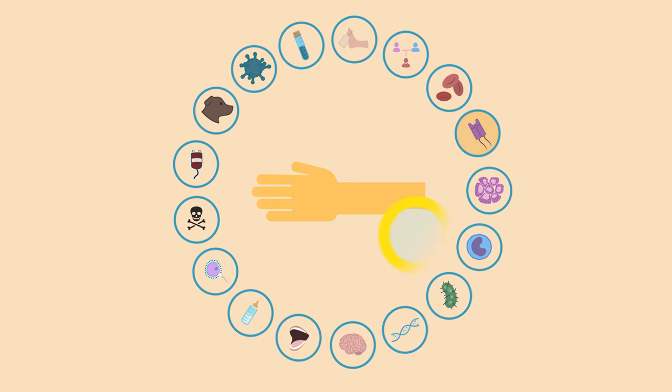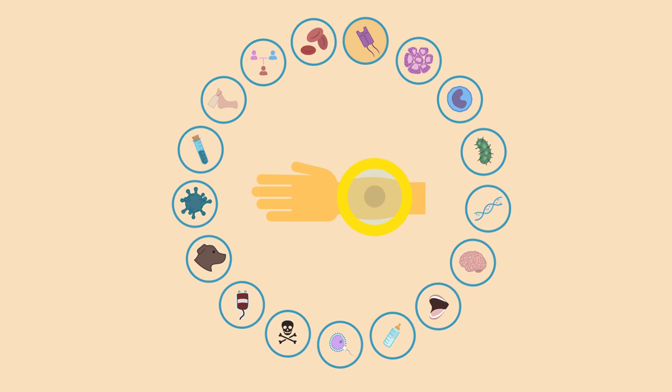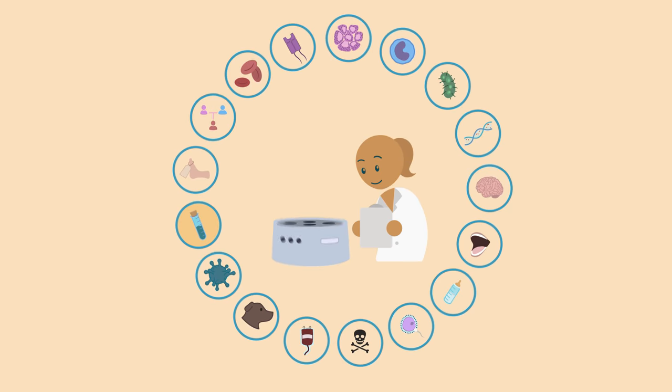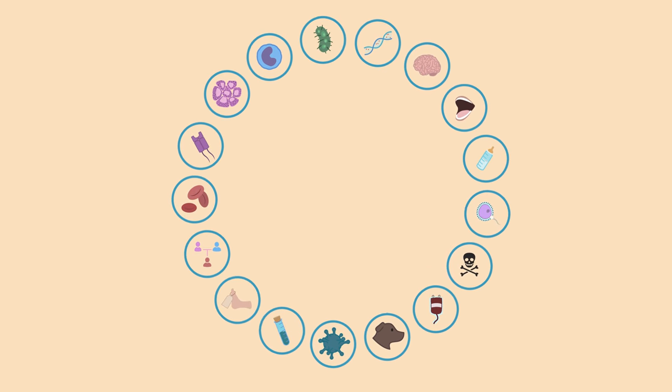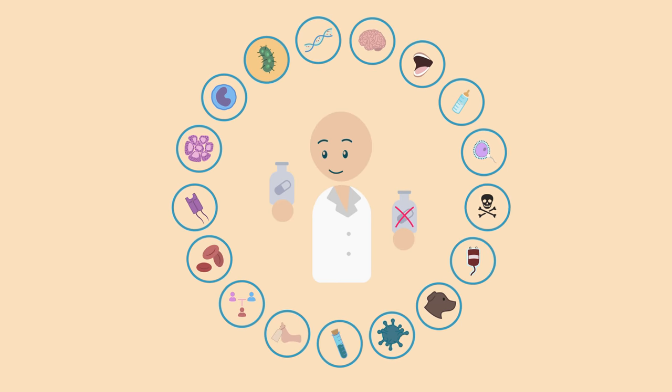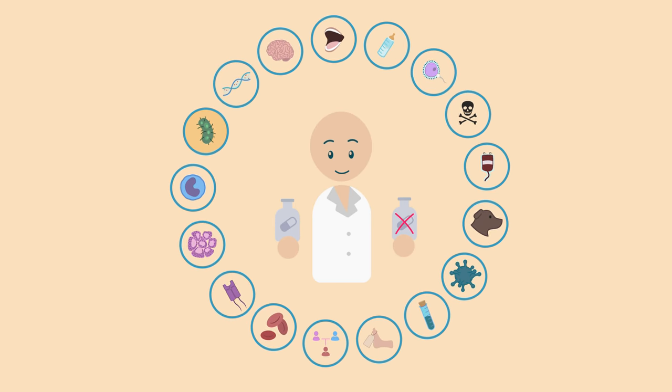When you find a lump, a histopathologist will work out if you have cancer or not. If you have diabetes, a chemical pathologist will plan your treatment and when you've got an infection, a microbiologist will advise whether or not you need antibiotics and if so, which one.